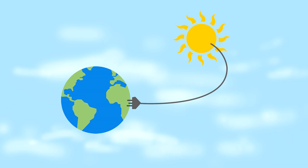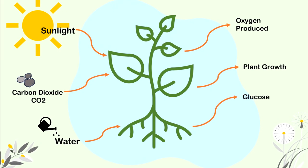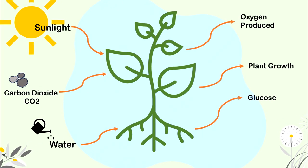The sun is the primary source of energy for life on Earth. Its light and heat drive weather patterns, ocean currents, and the water cycle. Photosynthesis in plants, which forms the base of the food chain, relies on sunlight.